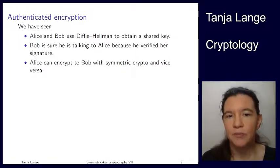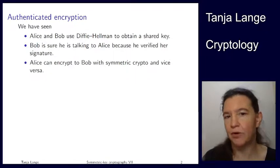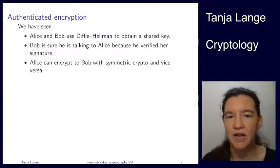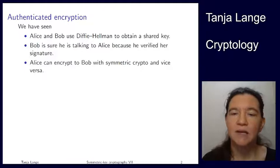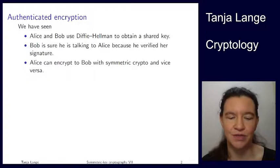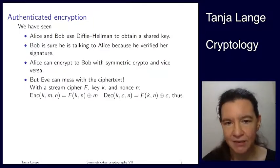Now Alice can encrypt to Bob with symmetric key cryptography, and Bob can send to Alice as well. We have seen block ciphers and stream ciphers there, but we haven't really seen yet some important security feature — namely, what happens when Eve messes with the ciphertext.